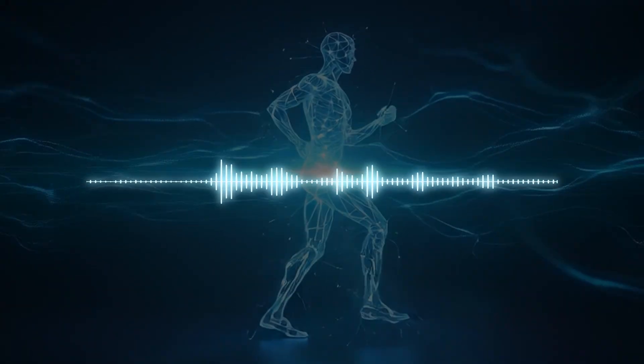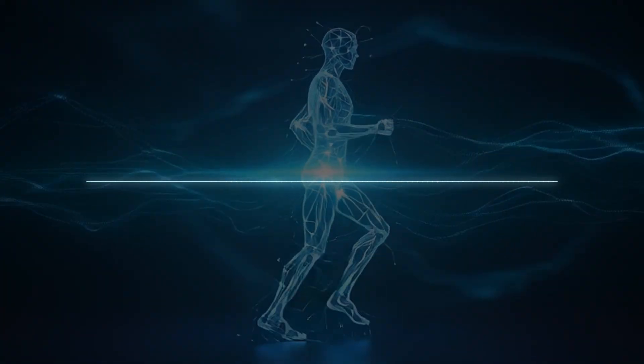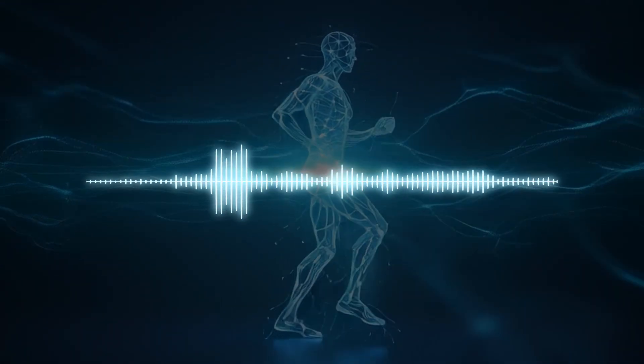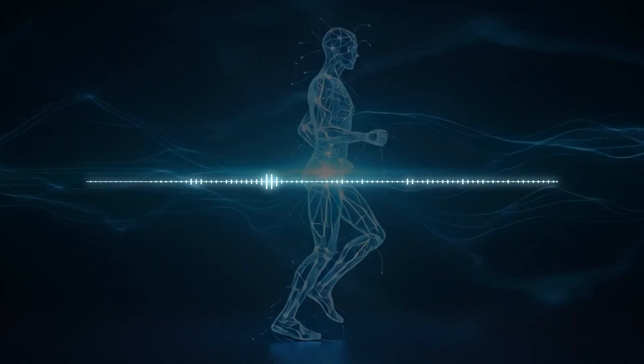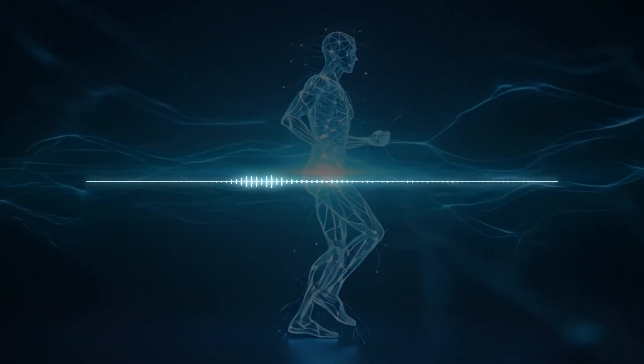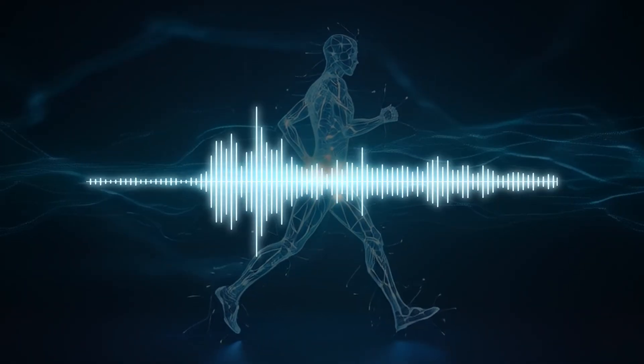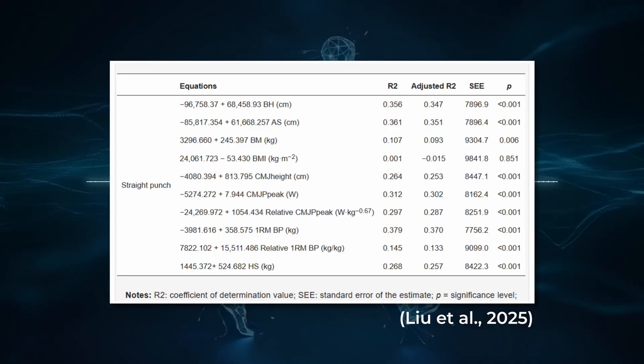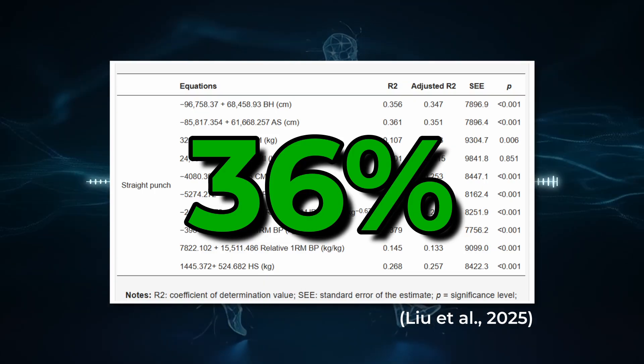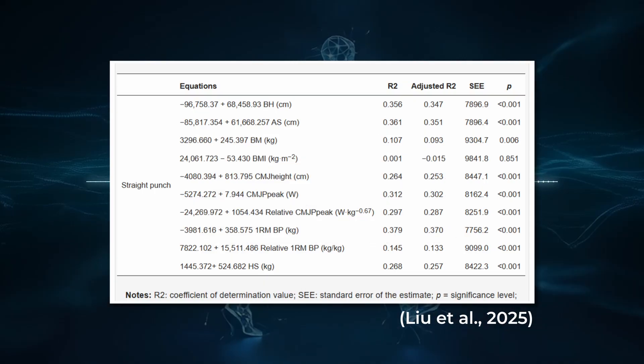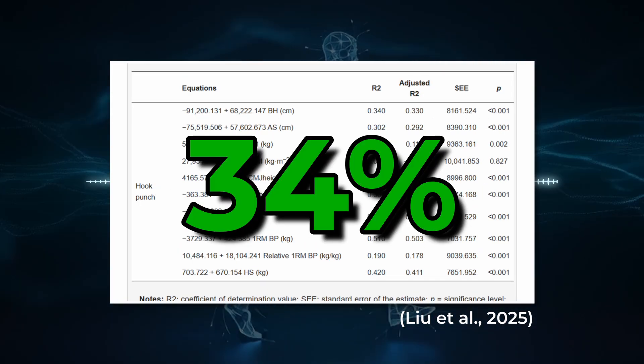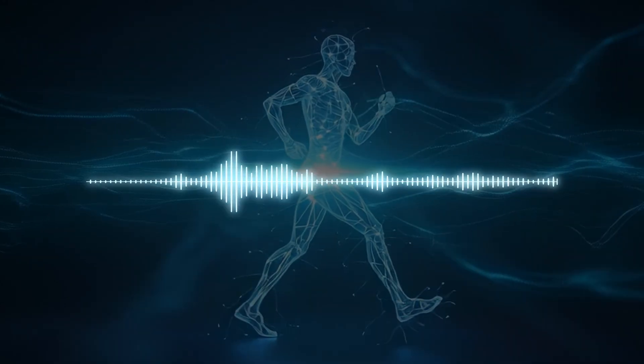Here's where everything we thought we knew about boxing gets turned upside down. Body height emerged as the king of punch power predictors. Tall fighters generated significantly more impact power in both straight punches and hook punches. Height alone explained 36% of the variance in straight punch power and up to 34% of hook punch variance.